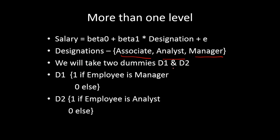In this case, we use two dummy variables: D₁ and D₂. D₁ takes one if the employee is a manager, and zero otherwise (analyst or associate). D₂ takes one if the employee is an analyst, and zero otherwise. There are three categories total, and we use two dummy variables.